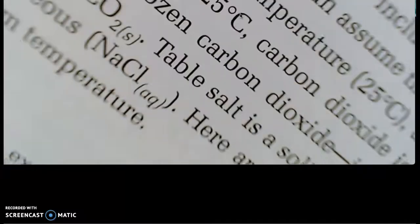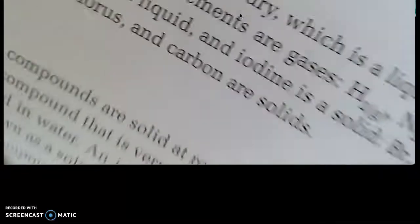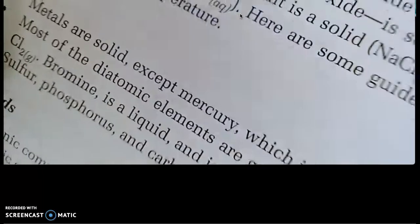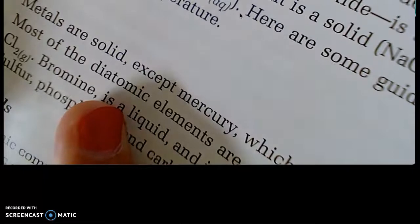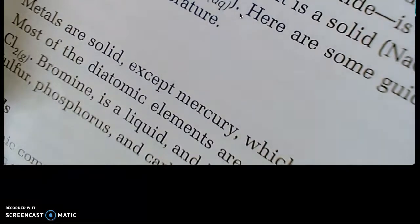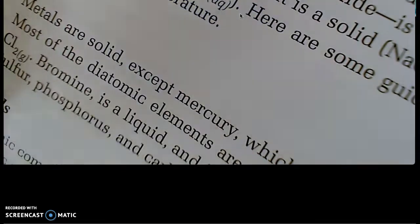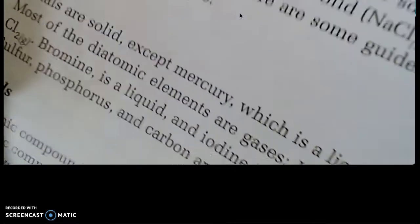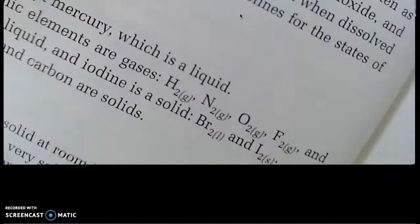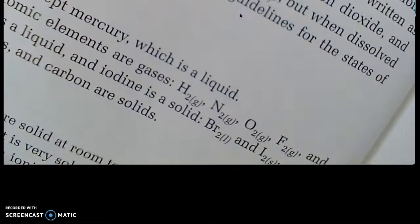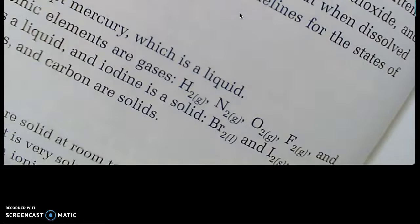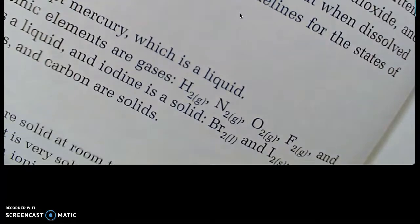Something we might as well mention while we're here is diatomic elements. There are some kids at school who are absolutely best friends, completely inseparable, and they're always together. There's a few elements that are like that: hydrogen, nitrogen, oxygen, fluorine, chlorine, bromine, and iodine - basically mostly halogens and hydrogen, oxygen, and nitrogen.